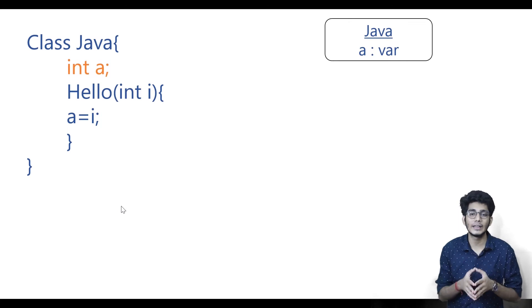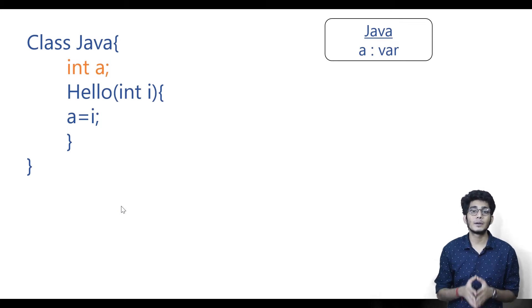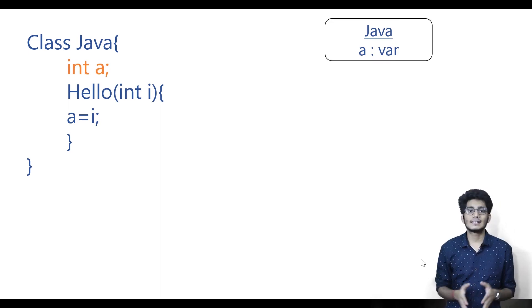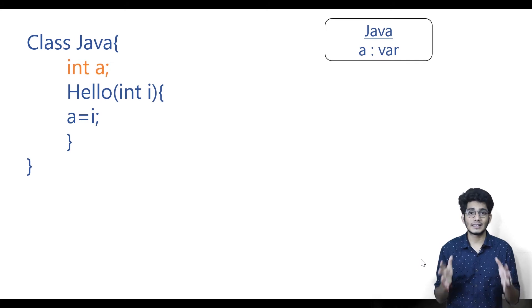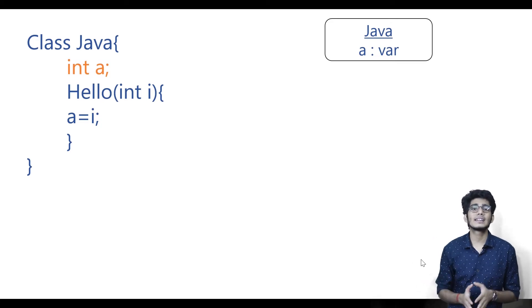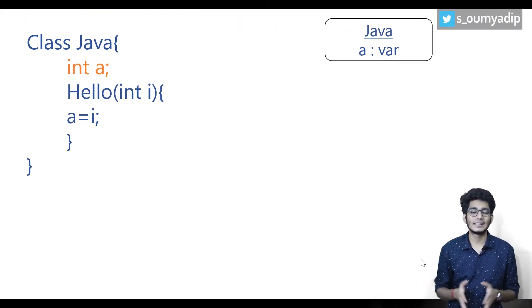Now, where will this instance variable be allocated? Your instance variable will be allocated in the heap, and it depends on your object. So whenever you destroy any object, your instance variable will also be destroyed. You can initialize an instance variable when declaring it, or within a constructor or a method.